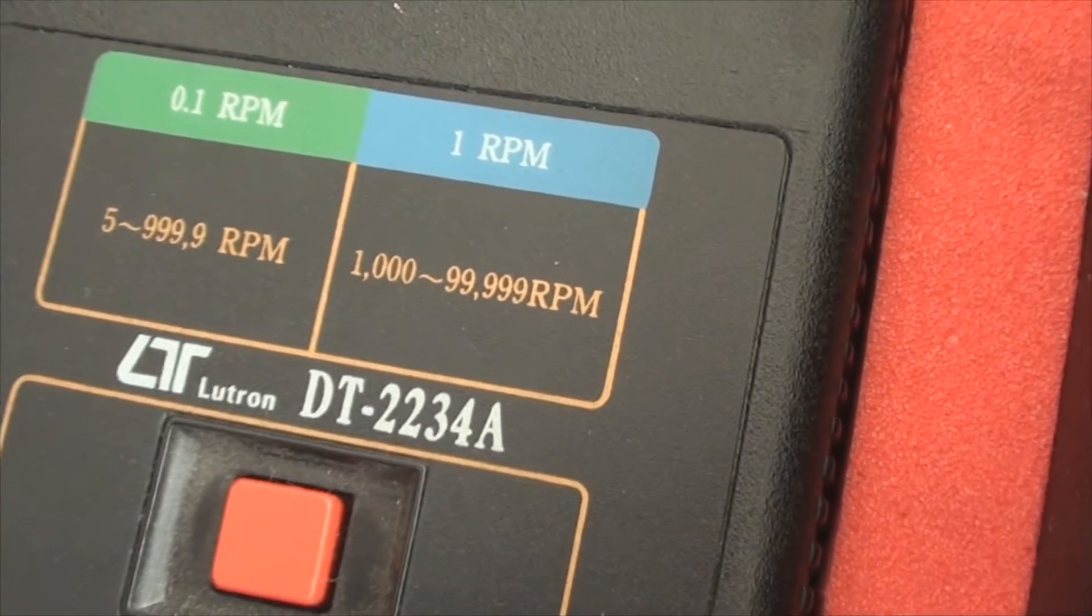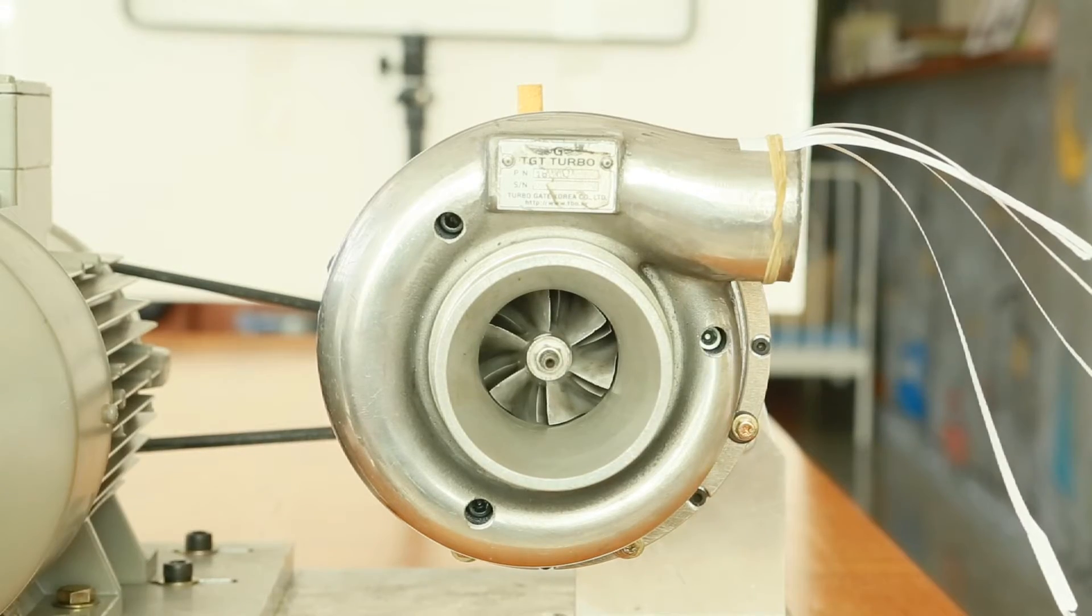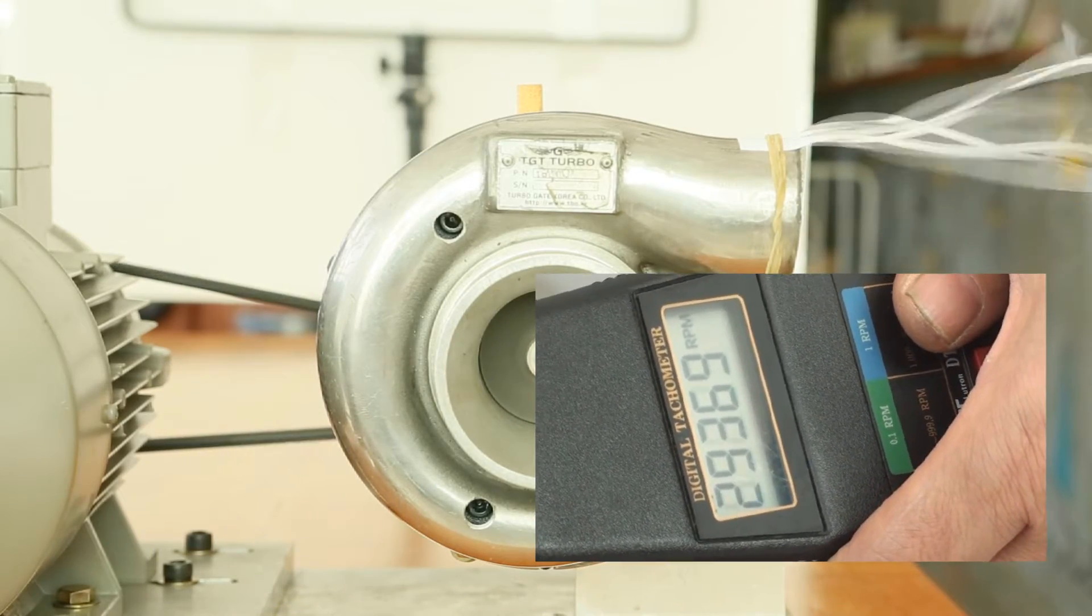The RPM tester that reads up to 99,999 RPM shows error signs showing that it's faster than 100,000 RPM.